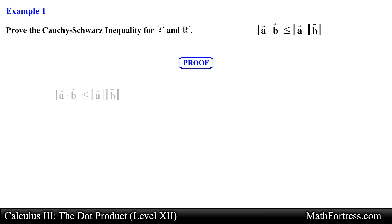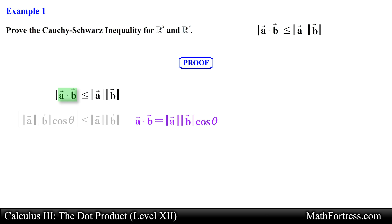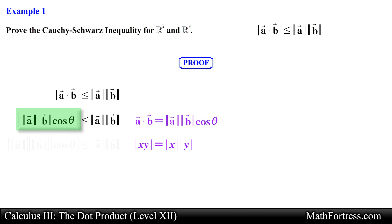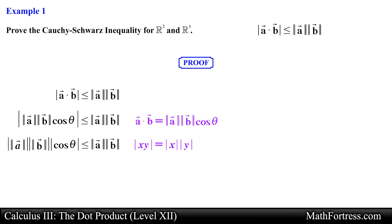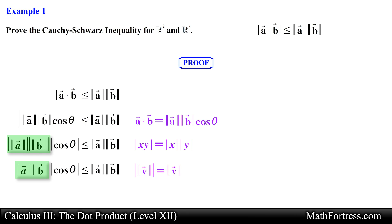Let's first rewrite the dot product on the left side of the inequality with the geometric definition. Then we go ahead and use the properties of absolute values and rewrite this expression. Since the magnitude of a vector is by definition positive, we can go ahead and remove the absolute value operator from these magnitudes.